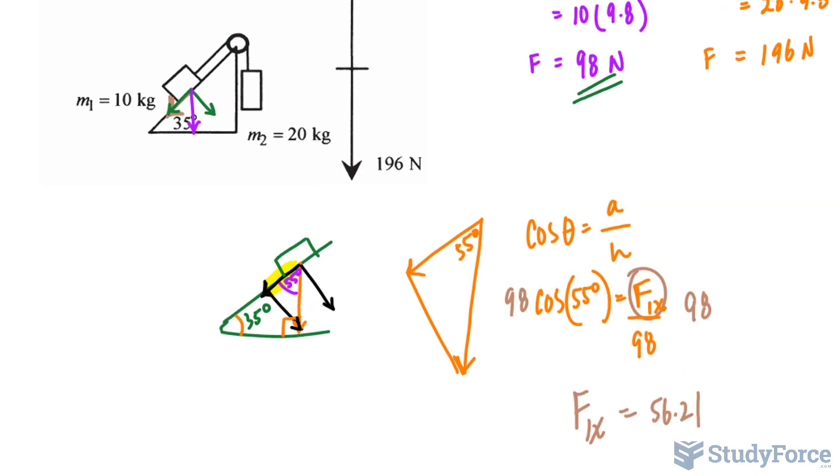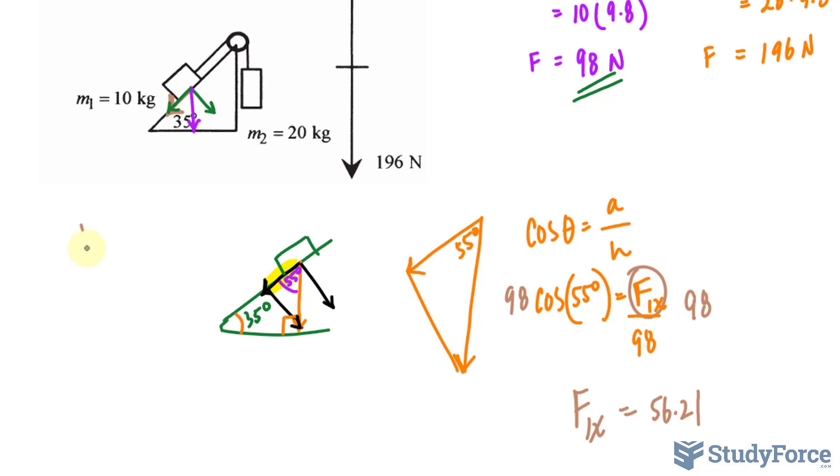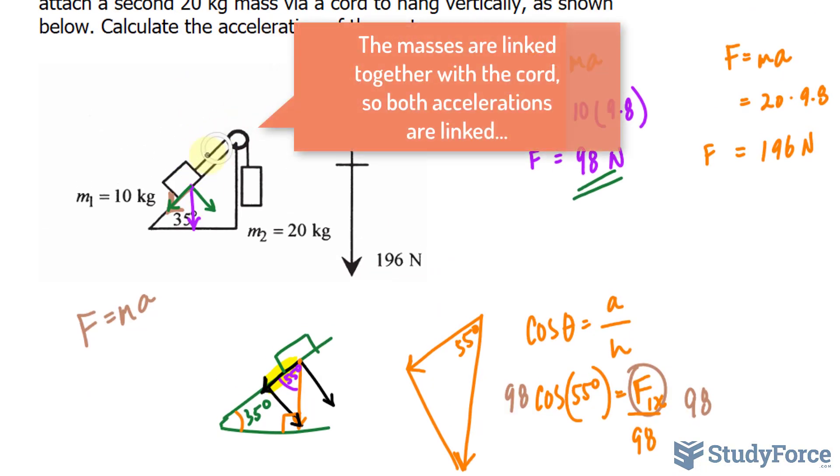Now it's not as simple as we did in part 1, where we now use the formula f equals mass times acceleration to find the acceleration of this mass by using 56.21 and the mass being 10 kilograms and solving for a, because there is a tension that we need to take into account. So how do we do that?